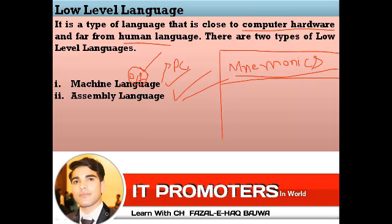In assembly language, instructions are written in English-like words and symbols. For example, words like SUB and ADD are used. Assembly language is therefore called a symbolic language.